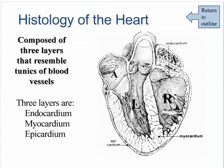The thickness of the heart wall varies with each of the four chambers: thickest in the left ventricle, thinner in the right ventricle, and very thin in both atria.